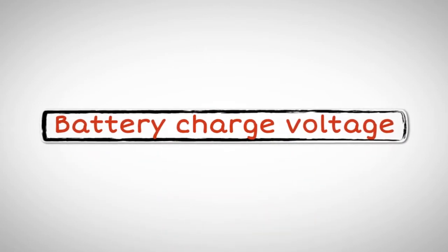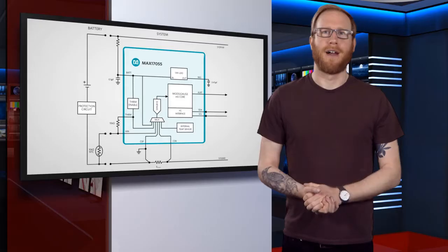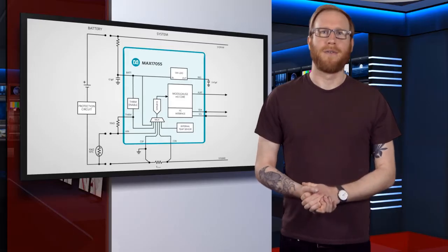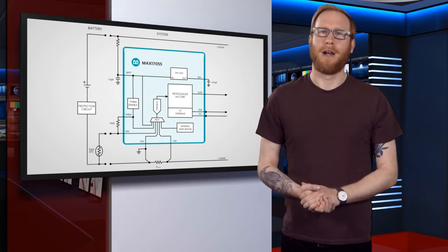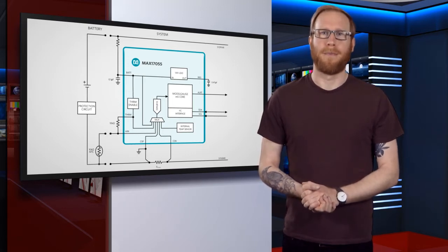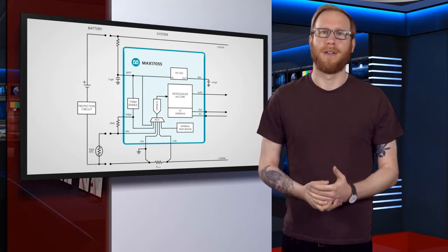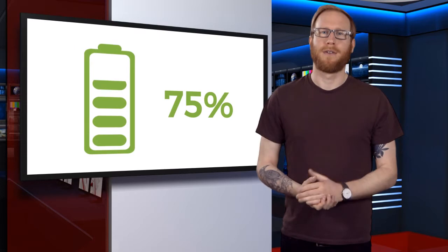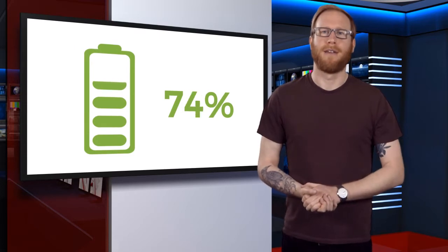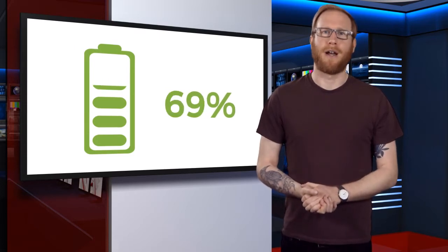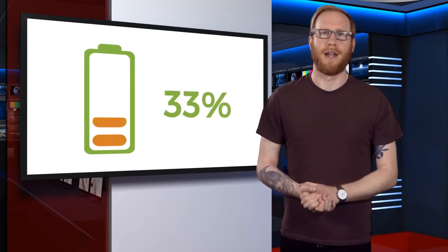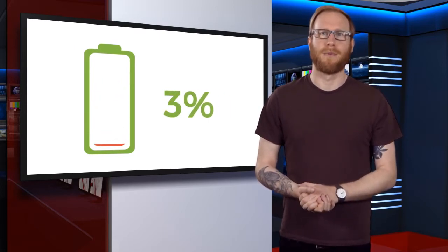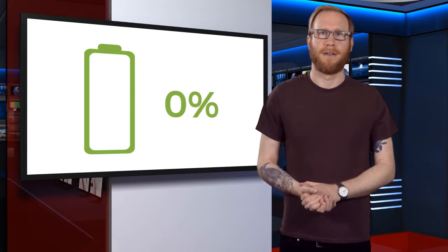Adaptive mechanisms included in the EZ algorithm increase the fuel gauge accuracy even more by helping you learn about the battery characteristics during use. One such mechanism guarantees that the fuel gauge output converges to 0% as the cell voltage approaches empty.